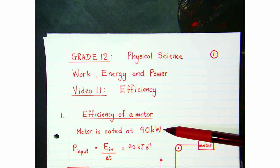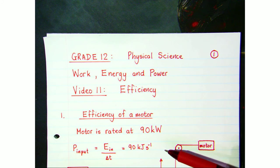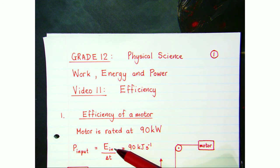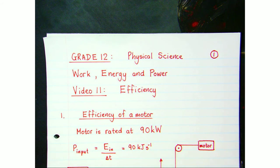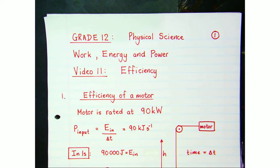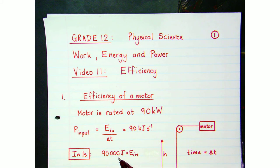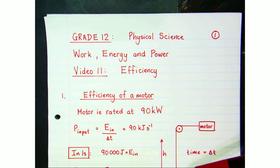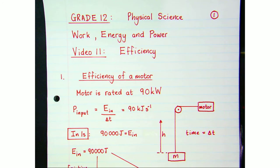Let's suppose we've got an electric motor that's rated at 90 kilowatts, so that motor can do 90,000 joules of work every second. The input energy by this electric motor would be 90,000 joules every one second, so in one second the motor can provide 90,000 joules of energy.